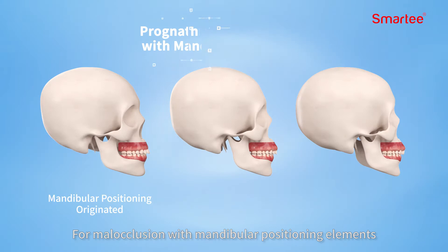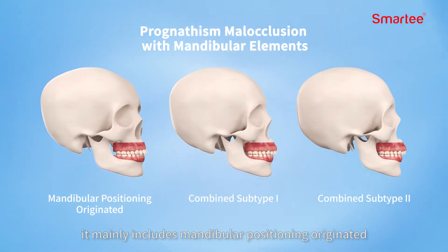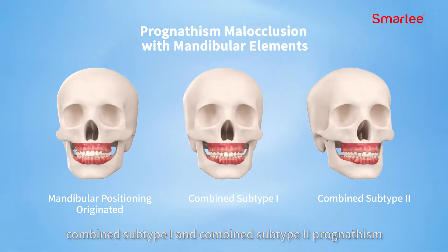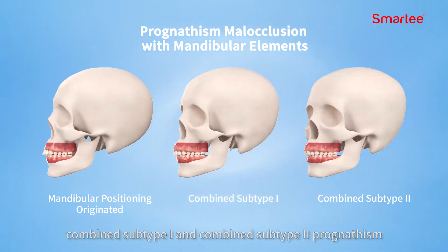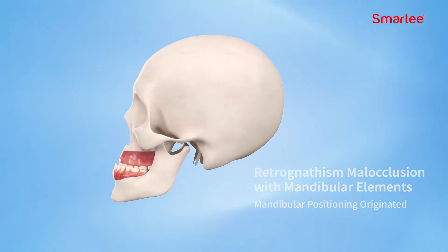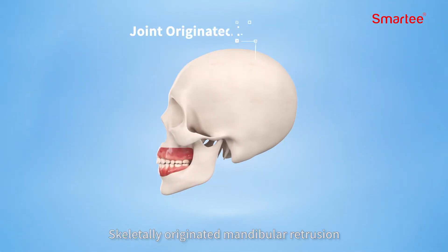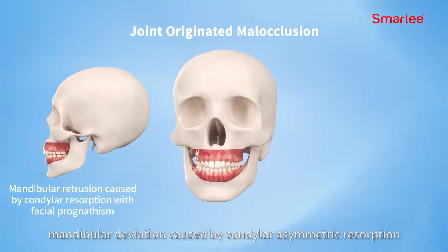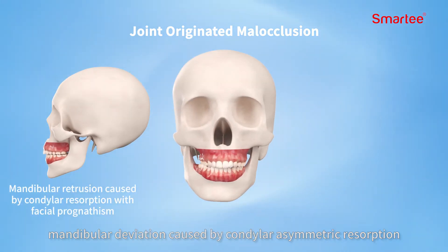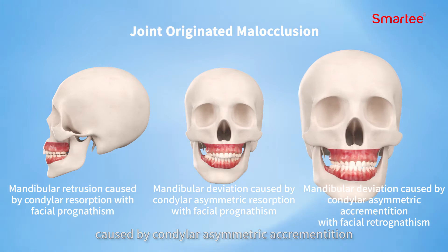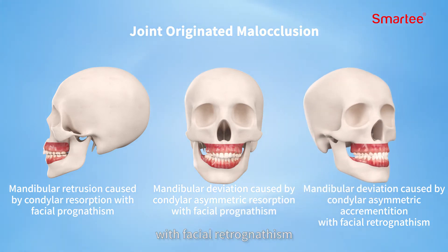For malocclusion with mandibular positioning elements, it mainly includes mandibular positioning originated combined subtype 1 and combined subtype 2 prognathism, mandibular positioning originated retrognathism, skeletally originated mandibular retrusion caused by condylar resorption with facial prognathism, mandibular deviation caused by condylar asymmetric resorption with facial prognathism, and mandibular deviation caused by condylar asymmetric accrementition with facial retrognathism.